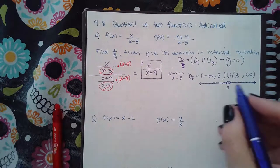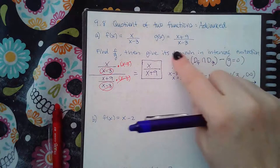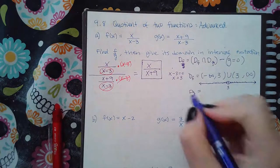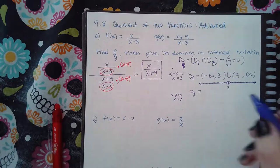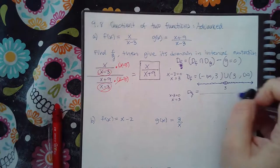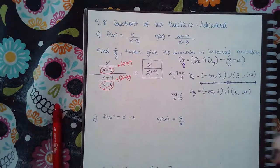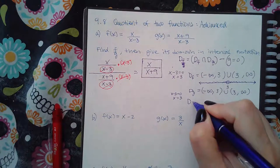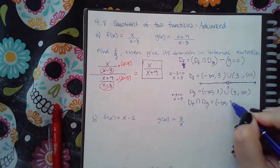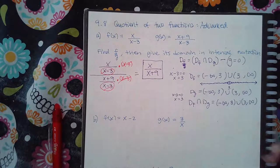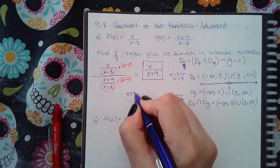Now I'll find the domain of g. The domain of g is all real numbers except values that make the denominator zero. It happens that g has the same denominator, x−3, so I get the same x value excluded, giving the same interval: negative infinity to 3, and 3 to positive infinity. Since both domains are identical, their intersection includes everything from negative infinity to 3 and then from 3 to positive infinity.